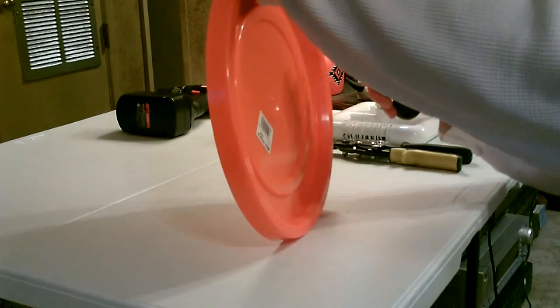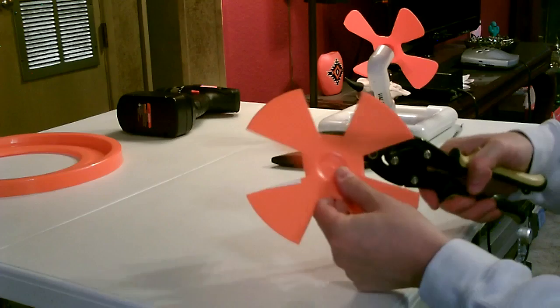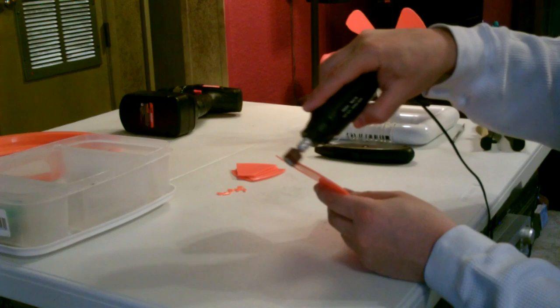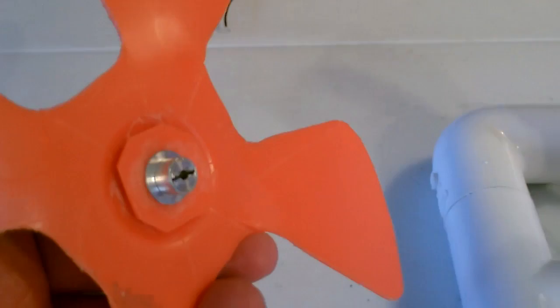I just made it out of a five gallon bucket lid. Cut the lid, start shaping it, sand it down, and then use a little heat source to shape it. And that's it. Snap it on the motor, good to go.